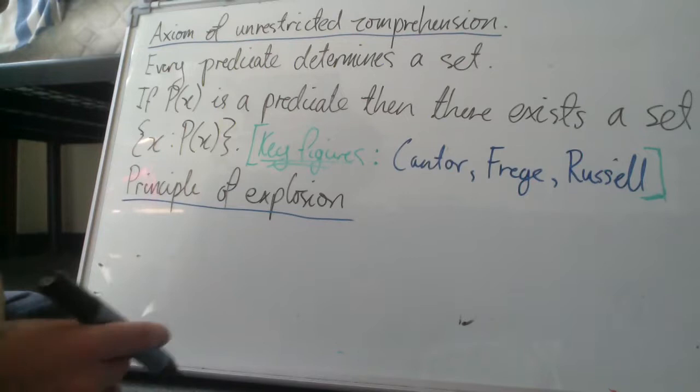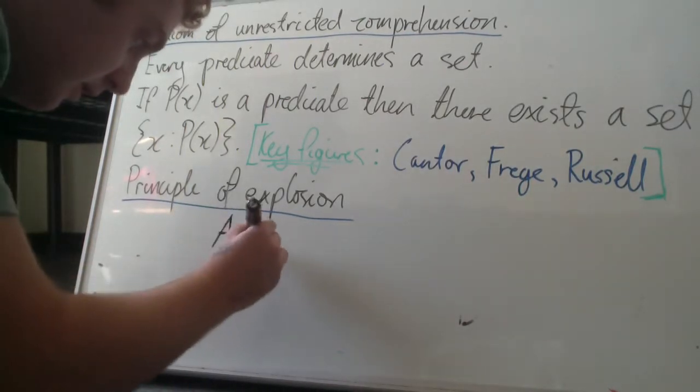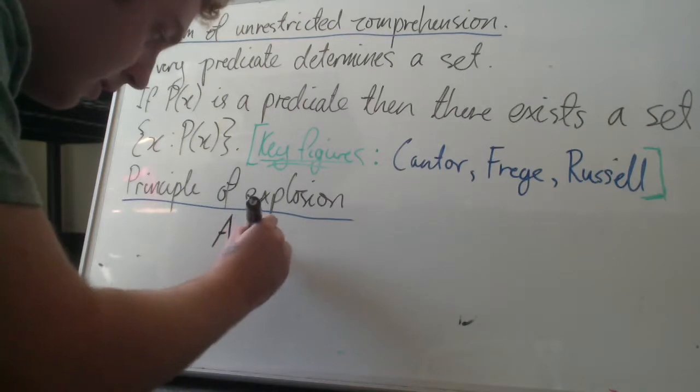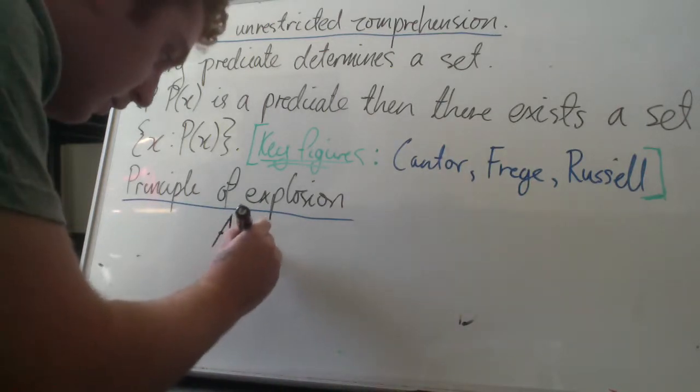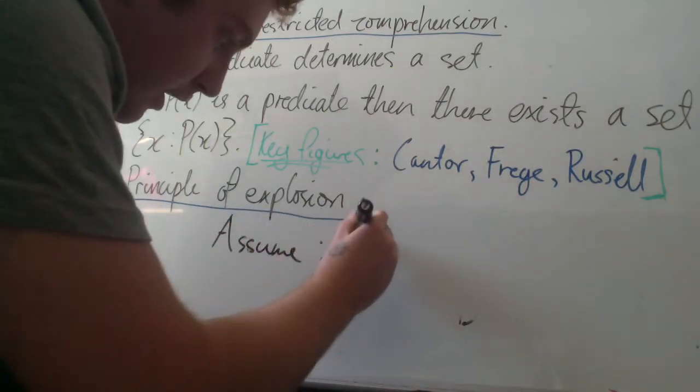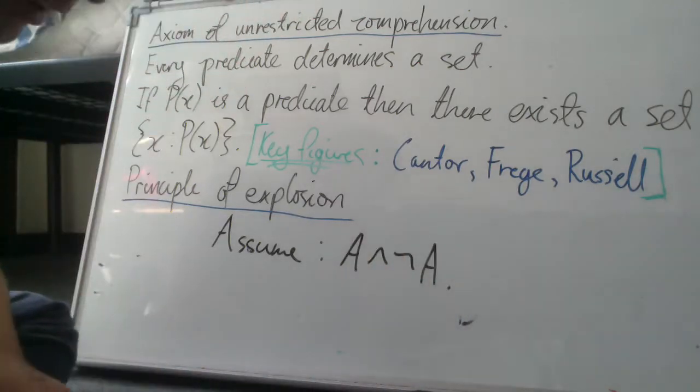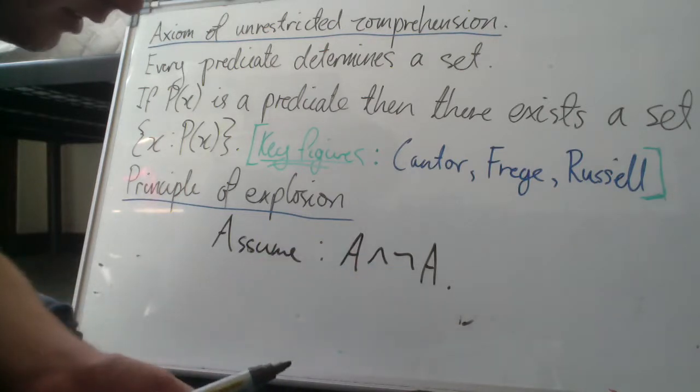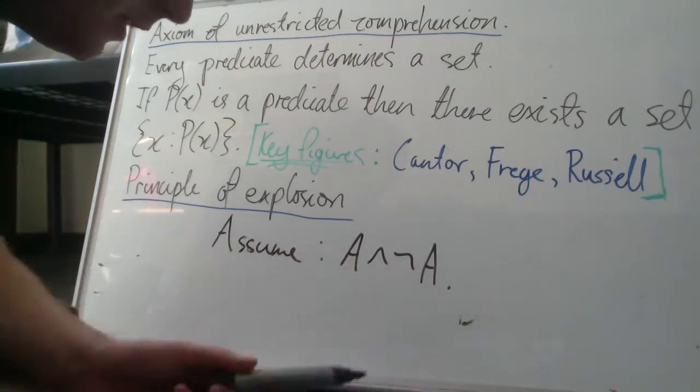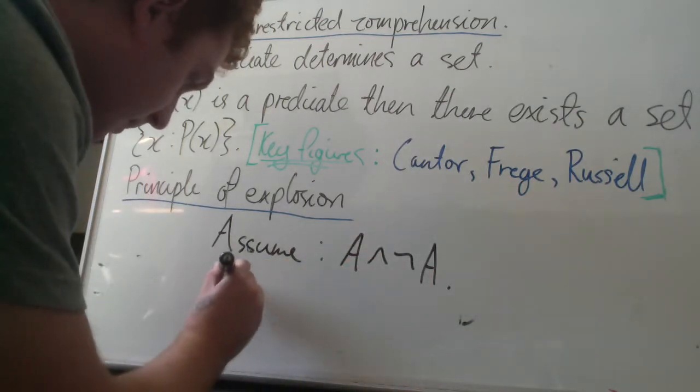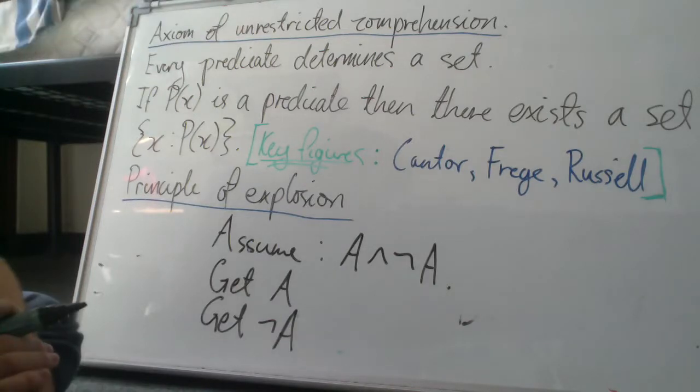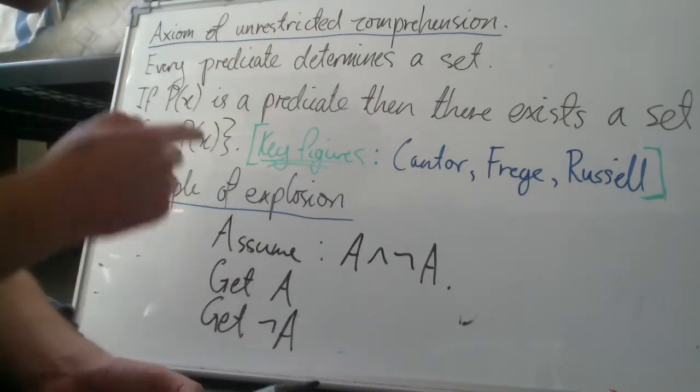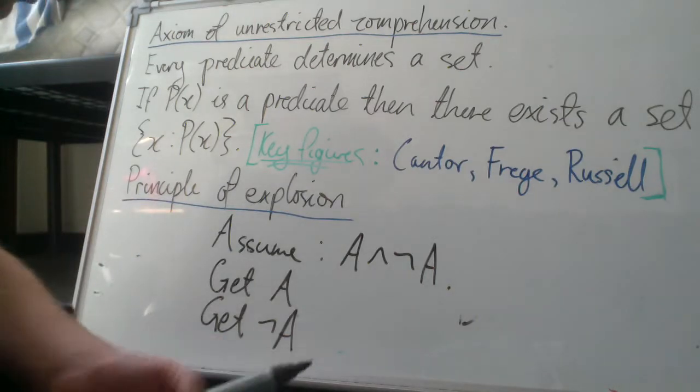So to prove the principle of explosion, assume A and not A. Therefore we can conclude both A and not A, so we get A, we get not A. This is obviously not the regular notation, but I'm just trying to give you an intuition into why this is true.